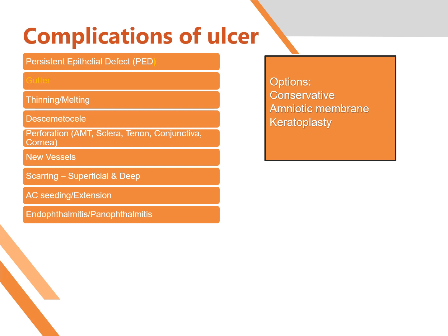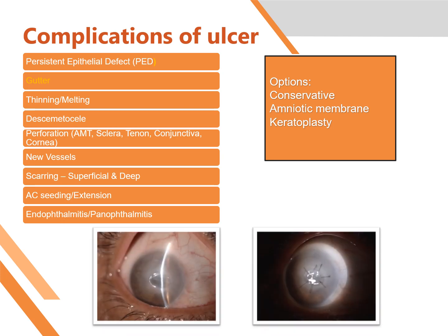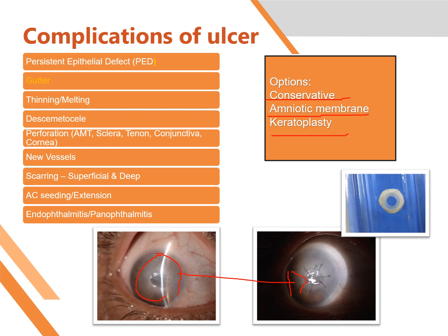The next complication is a gutter, where the cornea gets thin where the ulcer was. Though the ulcer is treated, this gutter is formed. It is liable to get infected and will keep irritating the patient. If it's a small one, you can treat it conservatively by giving artificial eye tears, or you can use amniotic membrane to fill the gap, or you can use keratoplasty. Here you can see a small piece of cornea taken from the rim left over from a keratoplasty and grafted onto this eye.